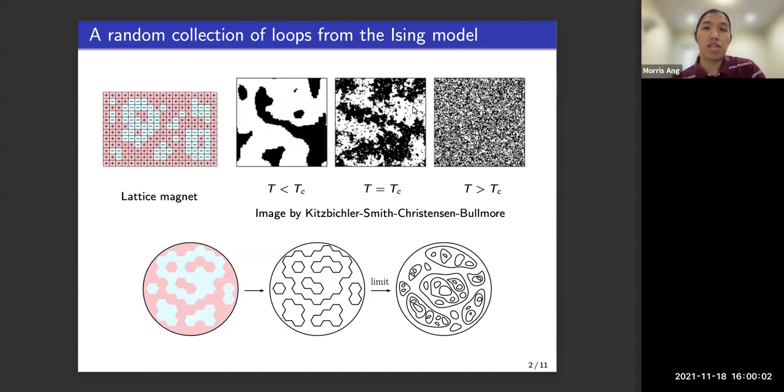So the conformal loop ensemble is closely related to statistical physics models, such as the Ising model. The Ising model is a lattice model of magnetism, where each site has either a plus spin or a minus spin, and if my neighbors are all plus, then I'm probably also going to be plus. Sites want to be similar to their neighbors.